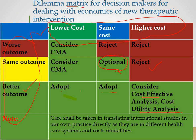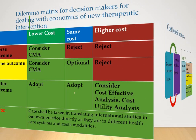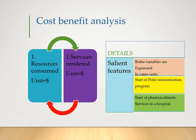If the cost is higher but the outcome is better, then you can consider cost effectiveness analysis and cost utility analysis. We use the term utility especially in oncology, where quality of life is simultaneously considered. This dilemma matrix decides whether you are going to adopt the alternate mode of therapy based on whether the outcome is better.